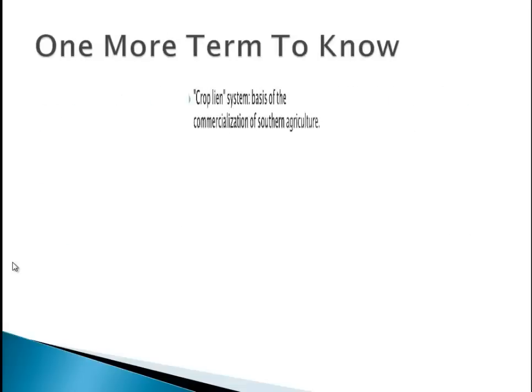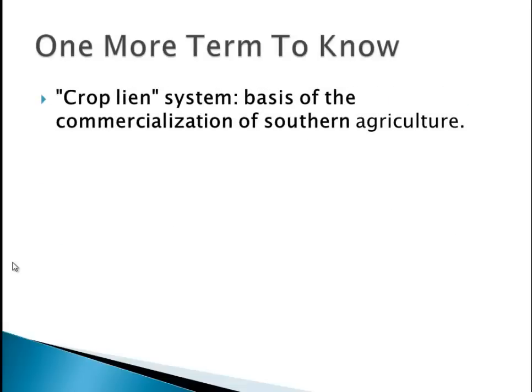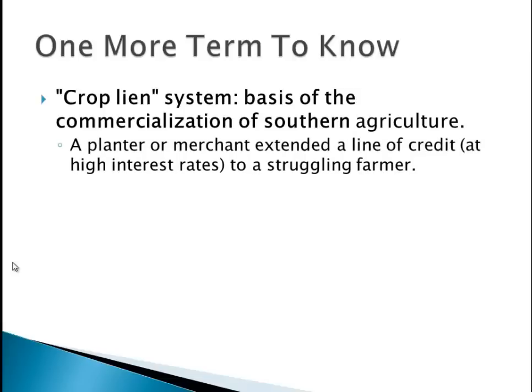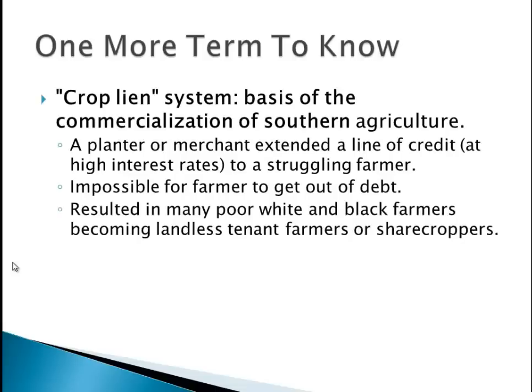Another term to know, which applies to the South, is the crop lien system. A planter or farmer who is poor would have to take out a line of credit at a very high interest rate. The problem is it was nearly impossible to pay back — really hard to get out of debt. This results in a lot of people becoming tenant farmers or sharecroppers, which we talked about in an earlier chapter.